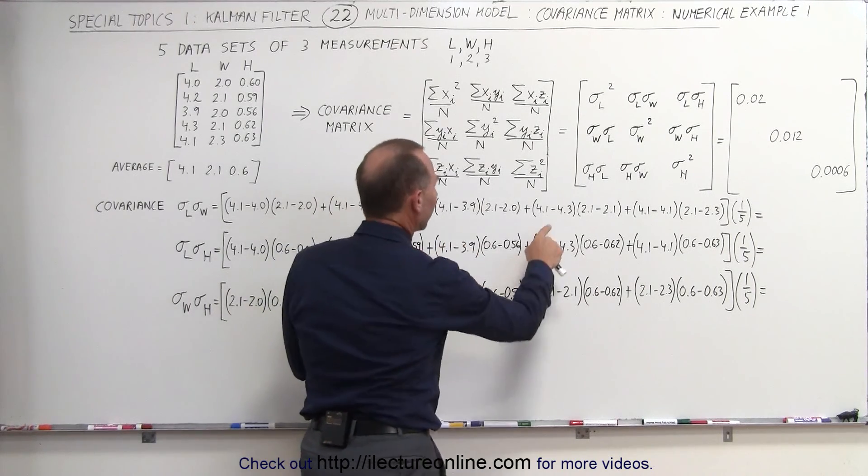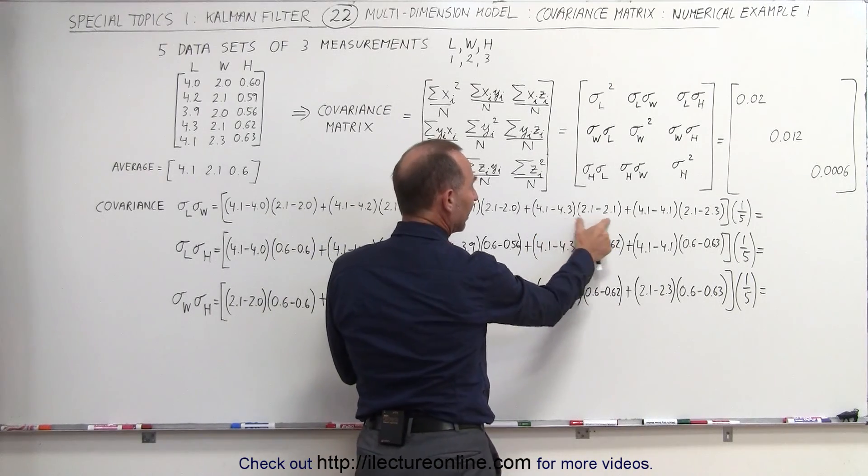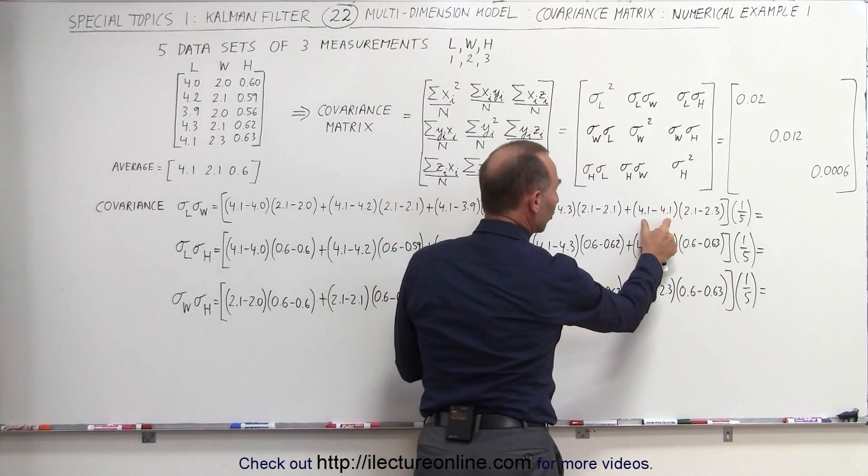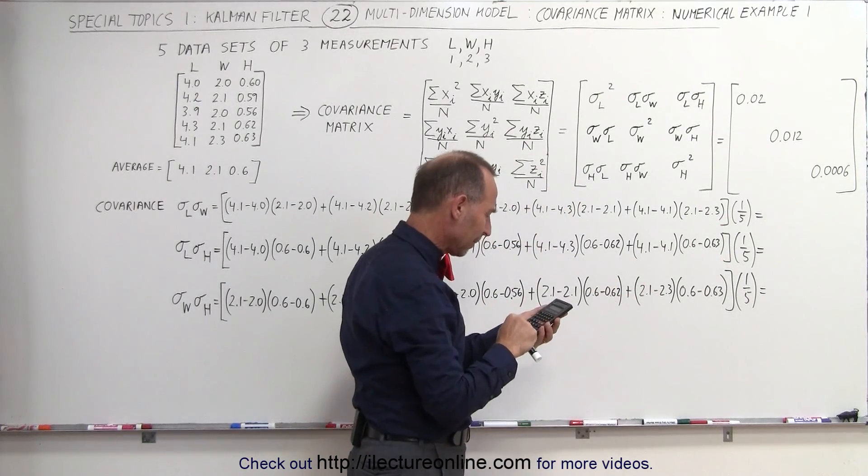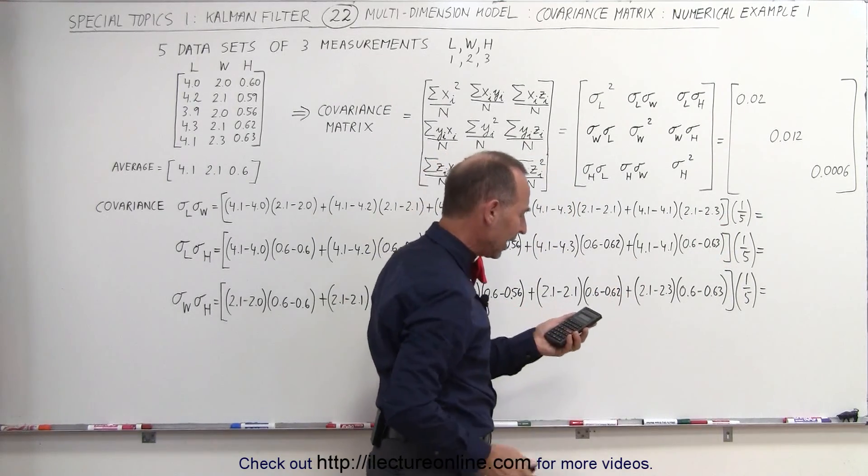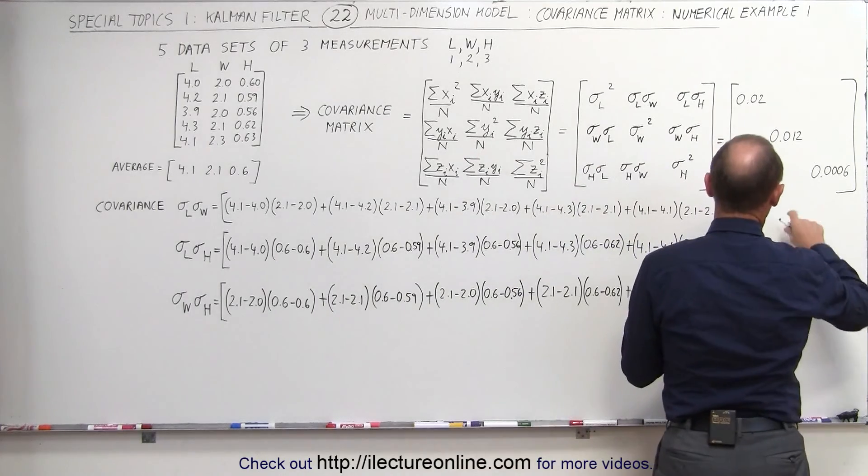Then here that would be 0 again because this term is 0, and then this term would be 0, so that's 0 again and we divide the whole thing by 5, and we get 0.06.